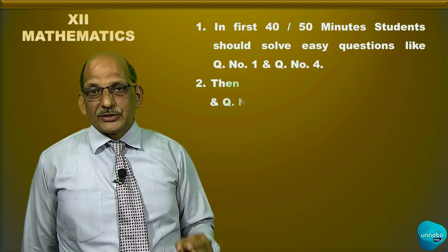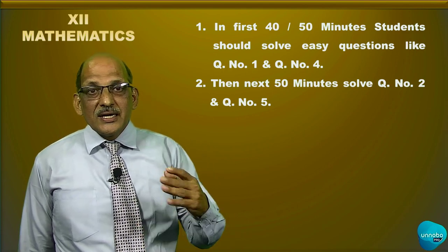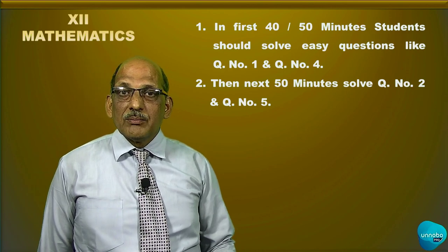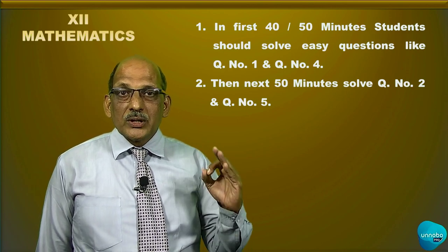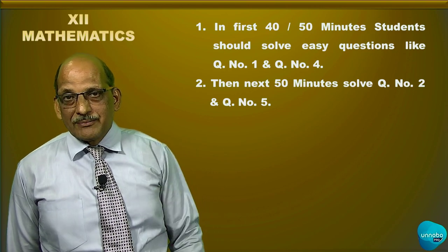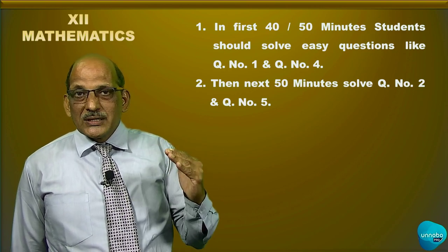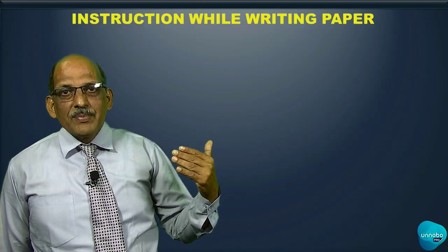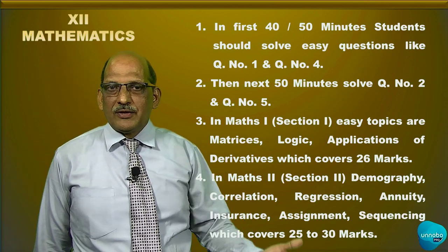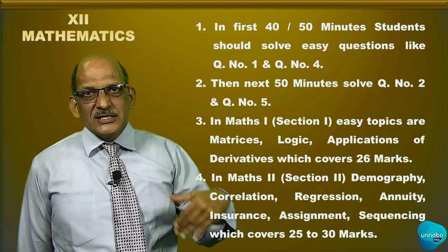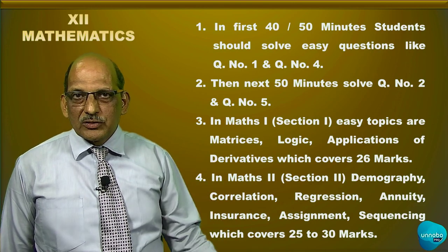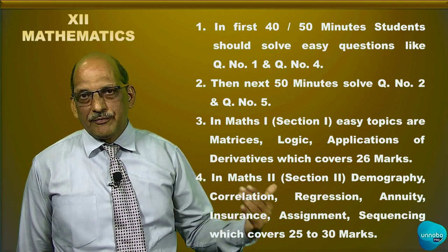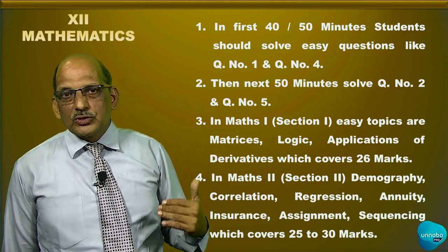Then in the next 50 minutes you can concentrate on question number two and question number five. Looking at the overall difficulty level: in section one, question one is easy, question two is slightly difficult, and question three is the most difficult. Similarly in section two, question four is easy, question five is slightly difficult, and question six is most difficult.